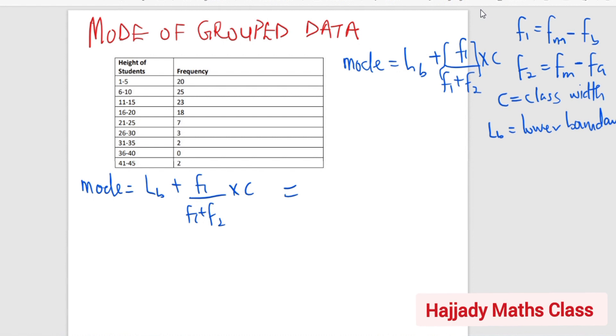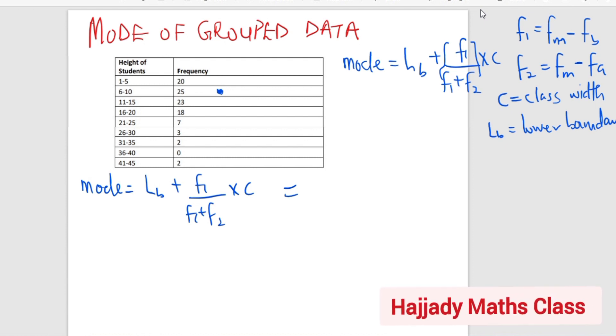And our modal class is where you see the highest frequency. And this is our highest frequency. So this is where our modal class is, which is 25. The highest frequency here is 25. So this is our modal class. That is 6 to 10 and 25. So this is what we are going to put into consideration.